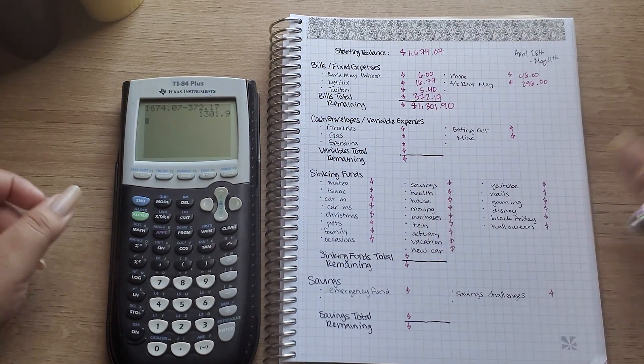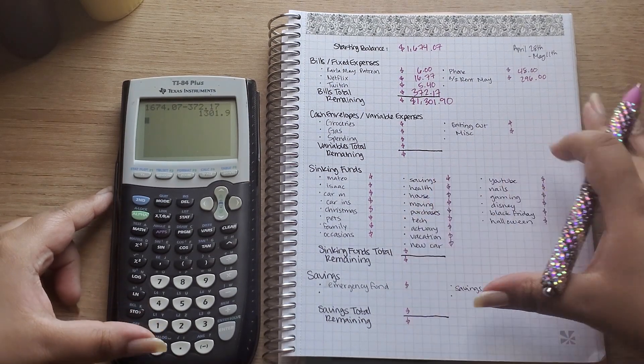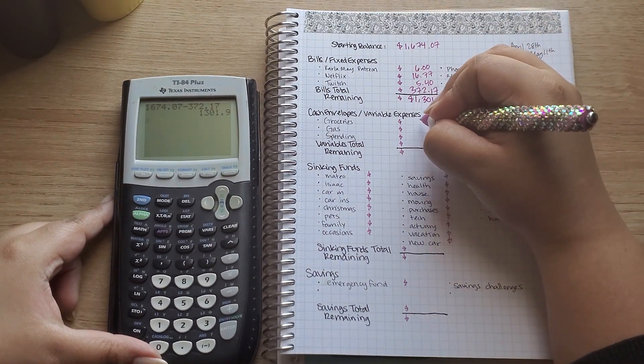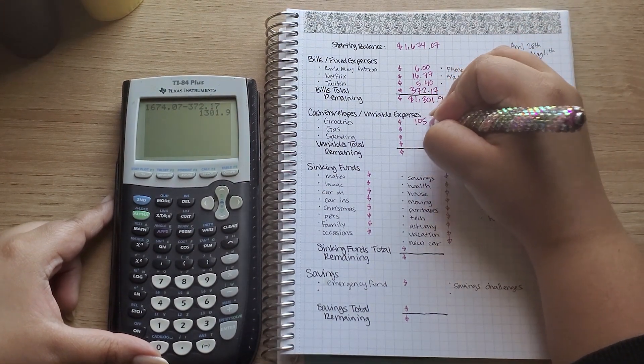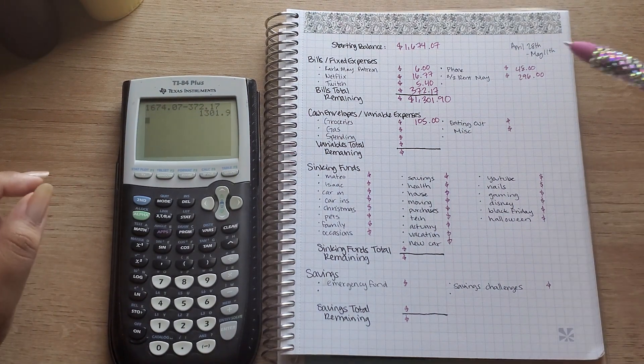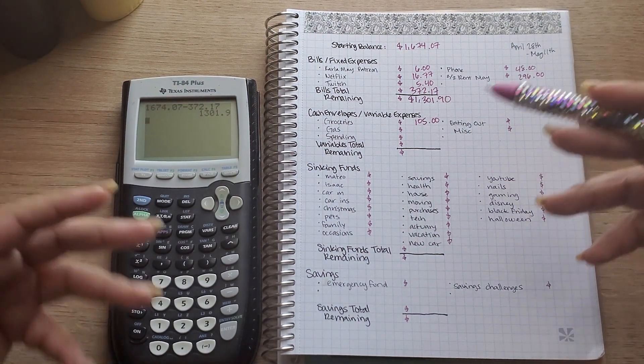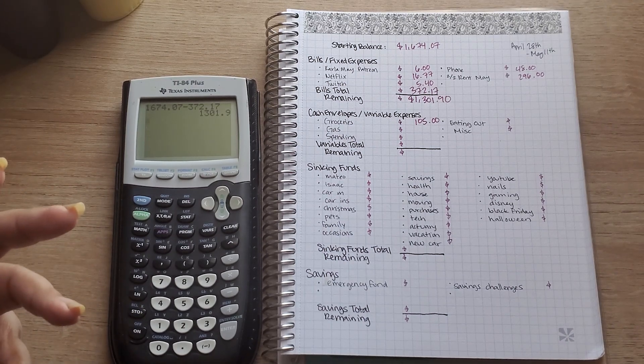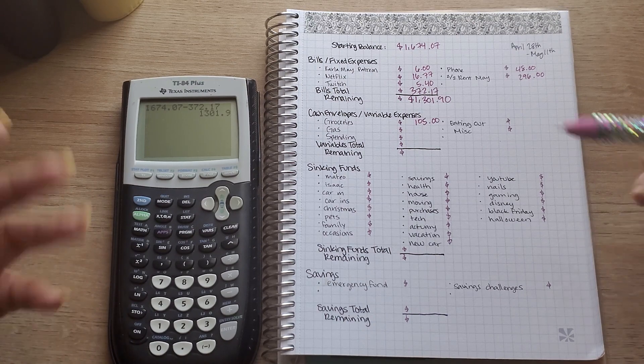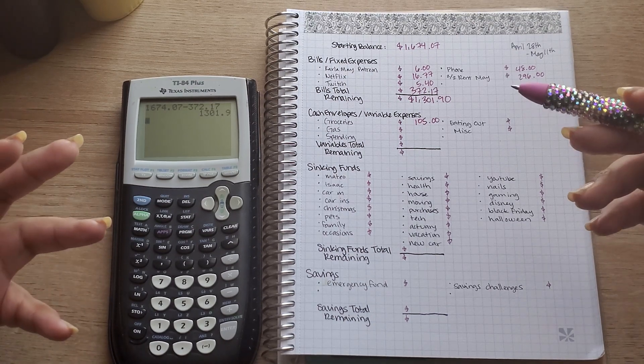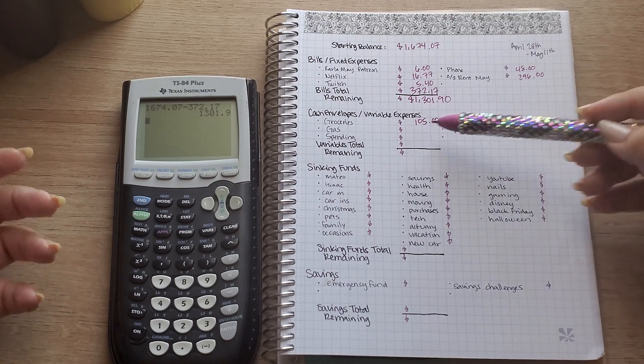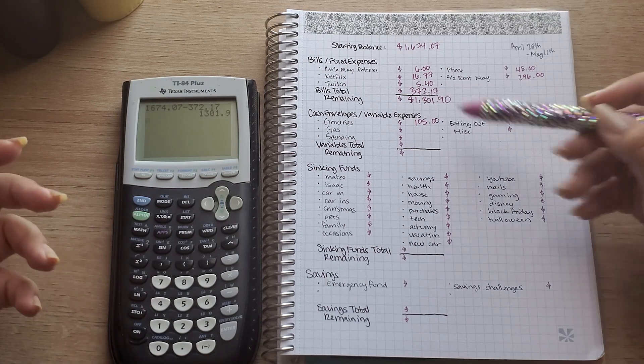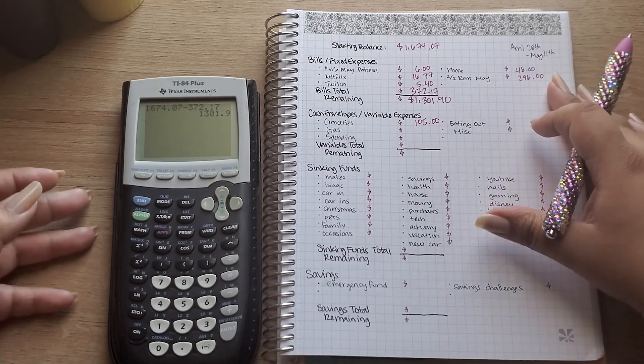Okay, on to my cash envelopes or variable expenses. So this paycheck I'm actually going to give myself $105 for groceries. The reason I'm doing that versus my usual $75 or $100 is because I went into the Target app, put everything that I needed to buy for groceries, looked at the total and then budgeted for that total. I originally was going to give myself $100 but the total ended up being like $103 and some change so I just upped it to $105.